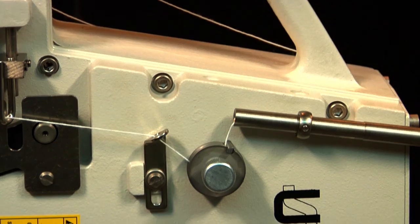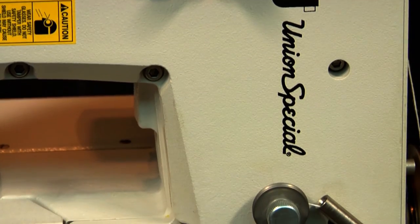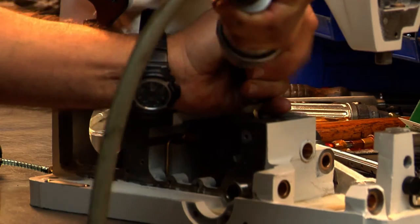Union Special is a 130-year-old American manufacturer of industrial sewing equipment. Our products are used around the world by the sewing and packaging industries. We assemble all of our heavy-duty machines here in our factory in Huntley, Illinois.